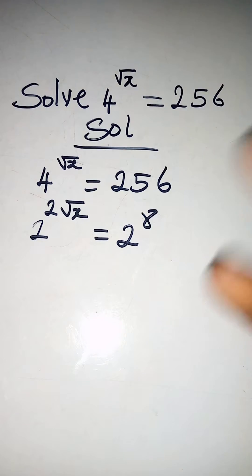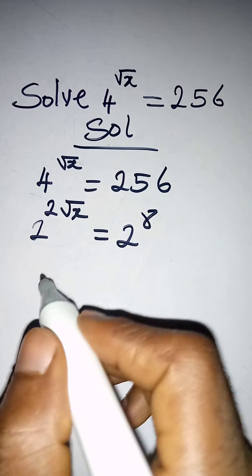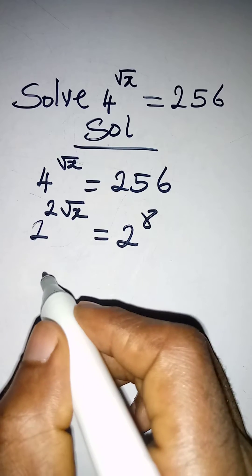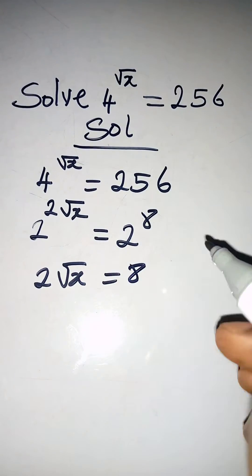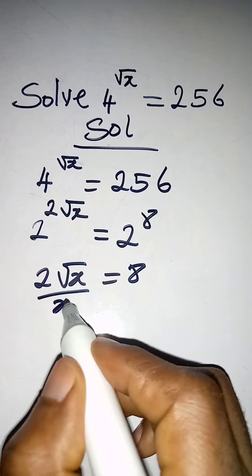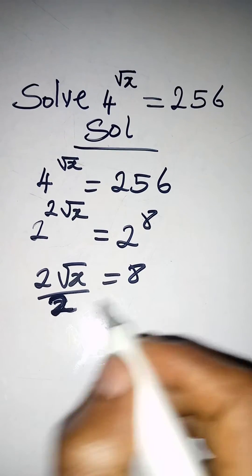And then from here we can work with the powers: 2 root x is equal to 8. And we can divide this by 2, so 2 will cancel 2.